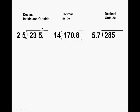Now taking a look at the next example, 170 and 8 tenths divided by 14, we see that there is no decimal located inside this divisor. If there is only a decimal inside the dividend or on the inside, the rule is you move it directly up. The only time you would move the decimal on the inside is if there is a decimal on the outside.